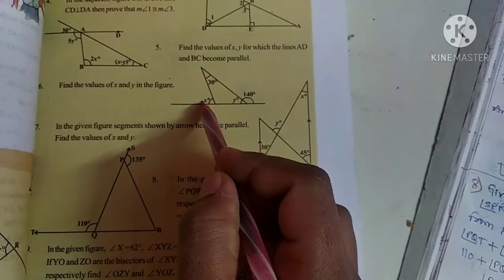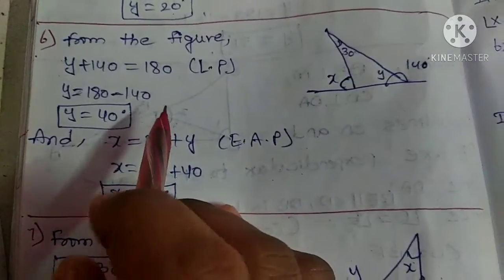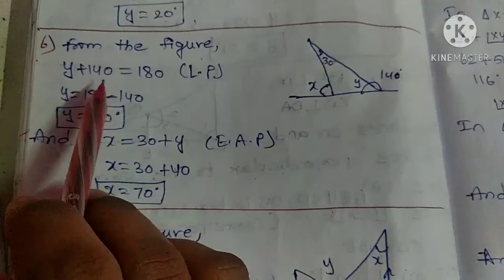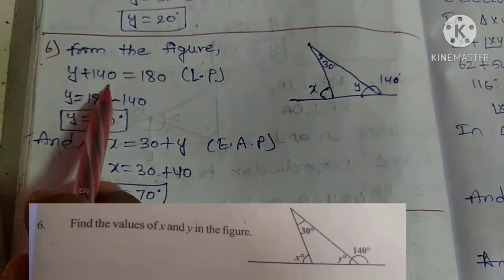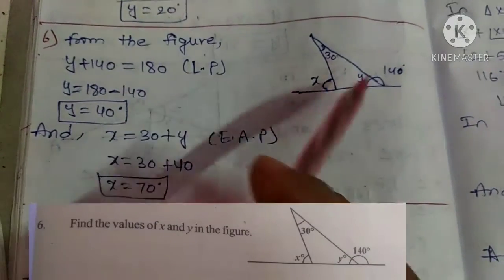From the figure, y plus 140 equals 180 degrees — it is a linear pair of angles.